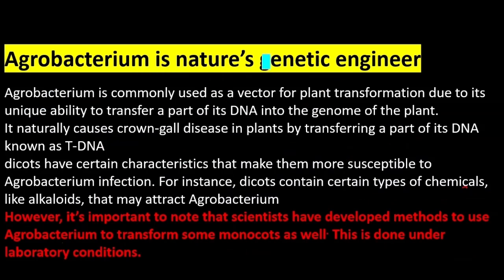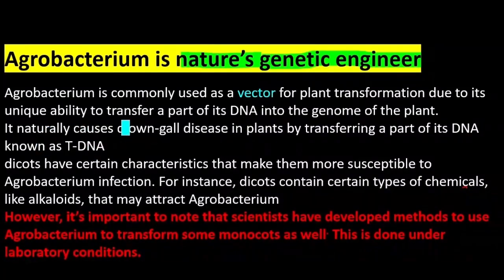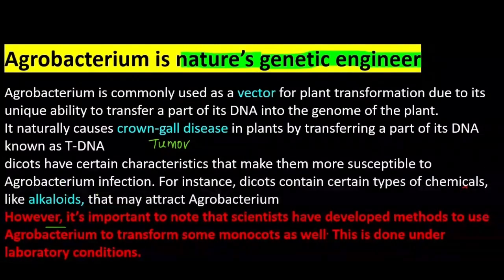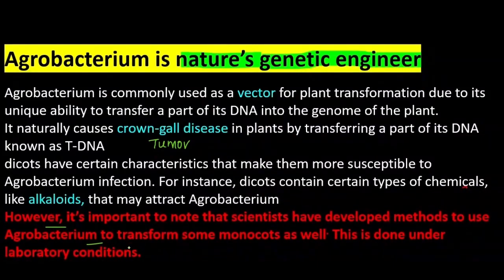Agrobacterium is nature's genetic engineer, and it is commonly used as a vector. Normally it causes crown gall disease, which is a type of tumor in plant cells. This Agrobacterium is very effective in the case of dicots because dicots have special types of chemicals like alkaloids. But nowadays scientists can do the same thing with monocots as well.